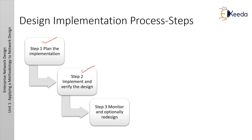The next step is implement and verify the design. The actual implementation and verification takes place during this step by building the network. This step maps directly to the implement phase of the PPDIOO methodology. The third step is monitor and optionally redesign. Once the network is put into operation, it is constantly monitored and checked for errors. If troubleshooting problems becomes too frequent or impossible to manage, a network redesign might be required. This can be avoided if all previous steps have been completed properly. This step is part of the operate and optimize phases of PPDIOO methodology.